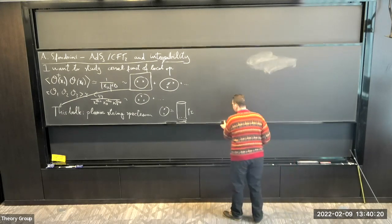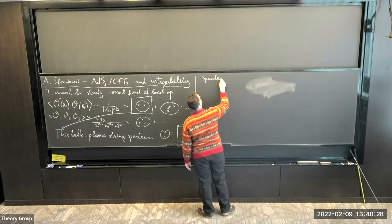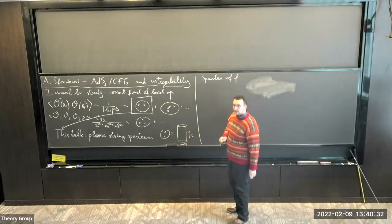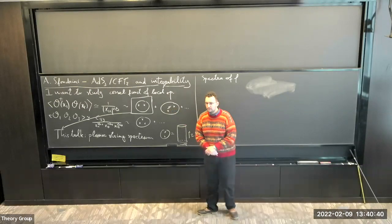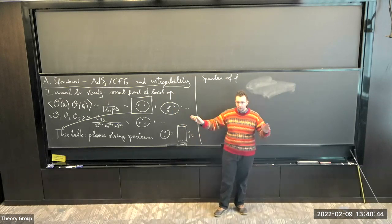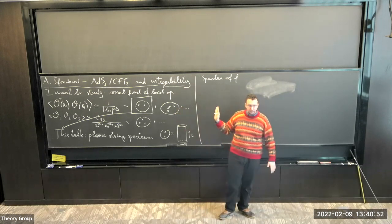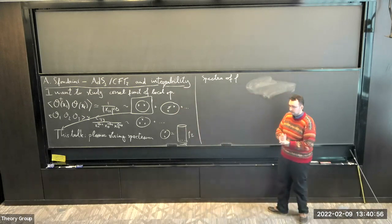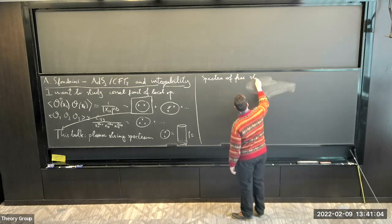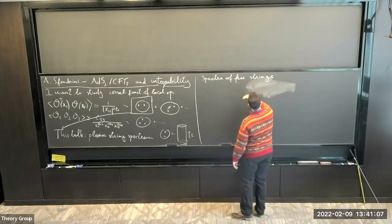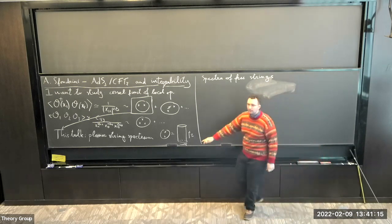Let me say something about spectra. What do I mean by planar in the context of ADS3/CFT2? I mean no genus corrections — the worldsheet is genus zero. If this were ADS5, this would also mean the planar 't Hooft limit in N=4, and if I knew exactly what the dual theory is it might mean some large-N limit of the dual. But I don't want to make assumptions about the dual. Spectra of free strings means strings which cannot split — they can just propagate like this in some fixed target space.